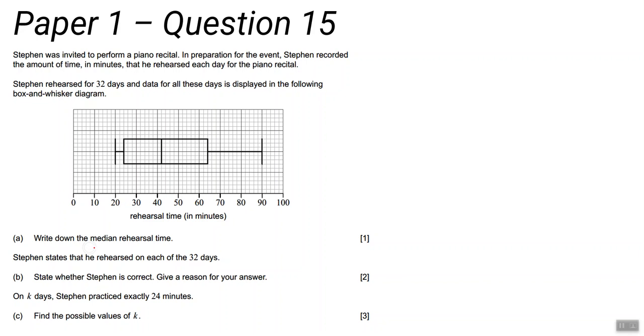Part A: Write down the median rehearsal time. I think most of you should have got that from a box and whisker plot. The median is the middle value. If you're not sure of your box and whisker plots, just go and check up on them.